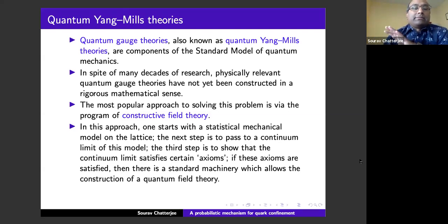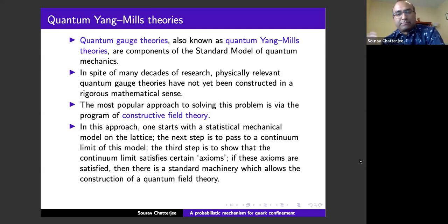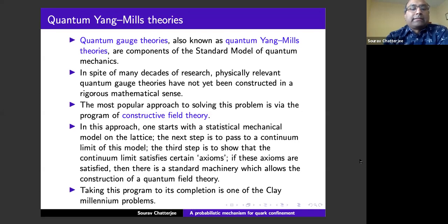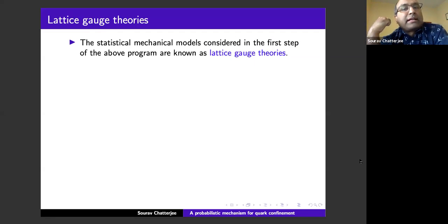The quantum field theory itself is not a statistical physics model — it's not a probabilistic object. Quantum field theory is traditionally an operator-valued distribution; it's about constructing operators on Hilbert spaces. But one can start from a statistical physics object and convert it. Taking this program to completion is one of the Clay problems, as most of you know.